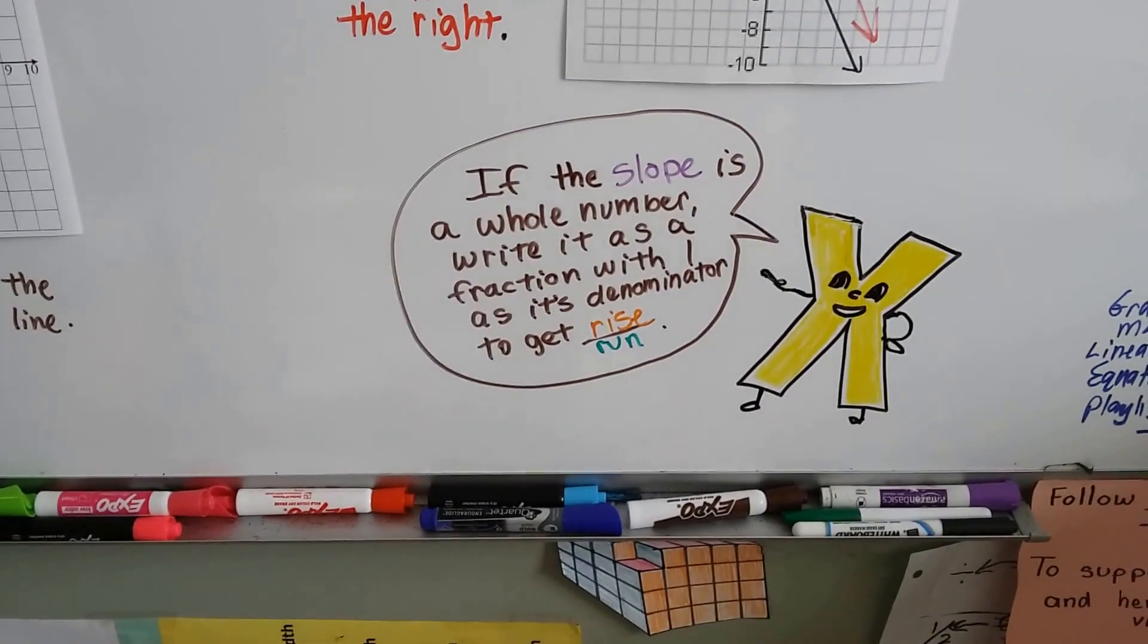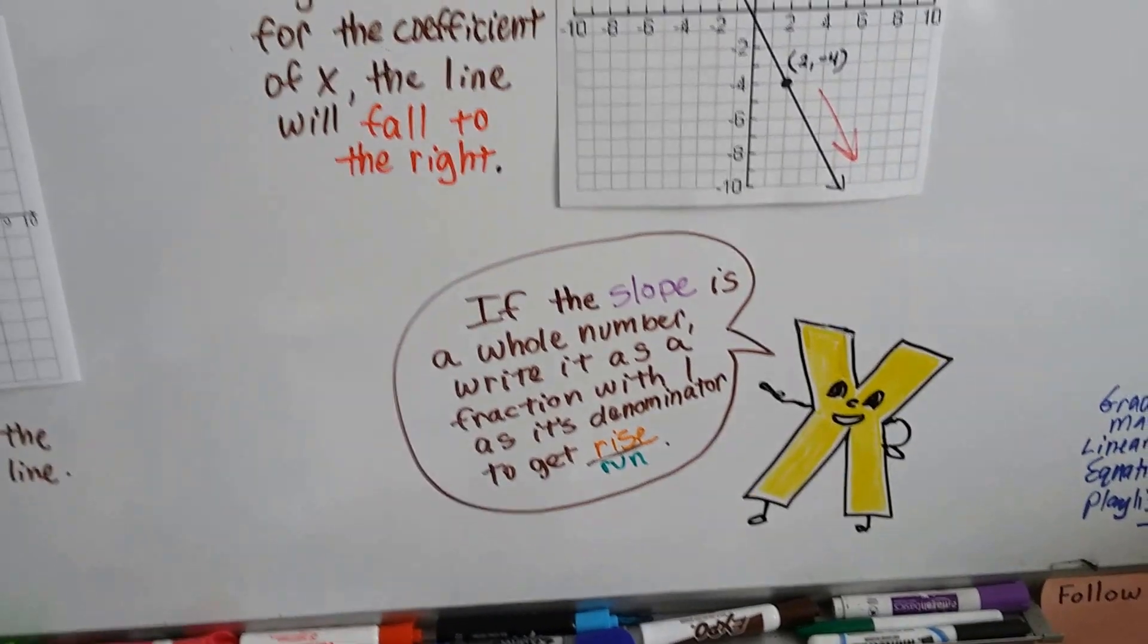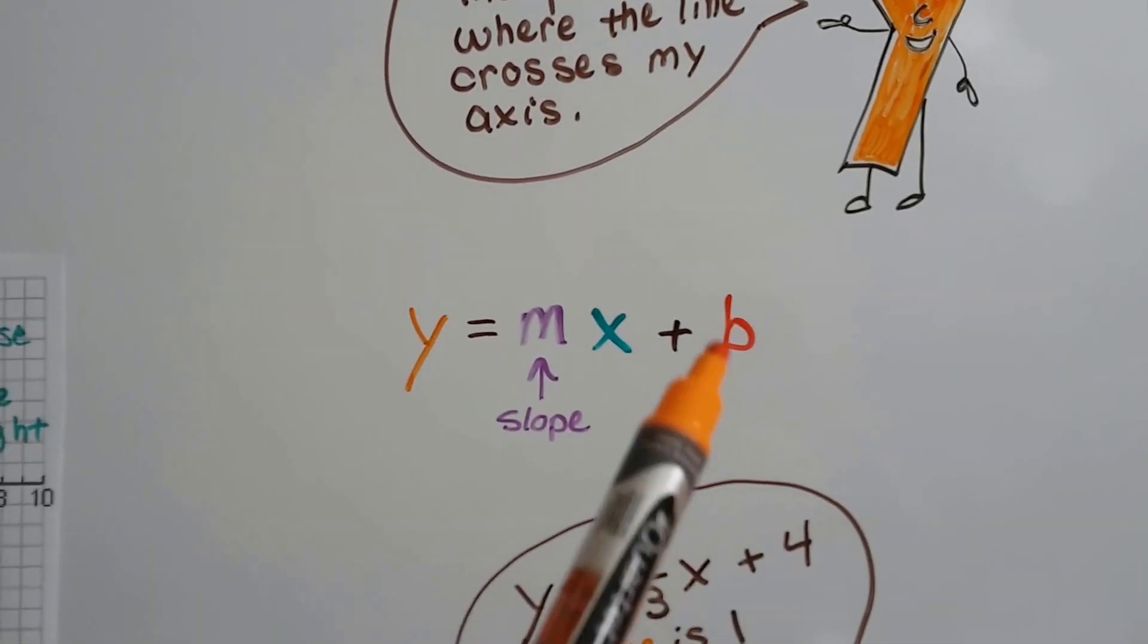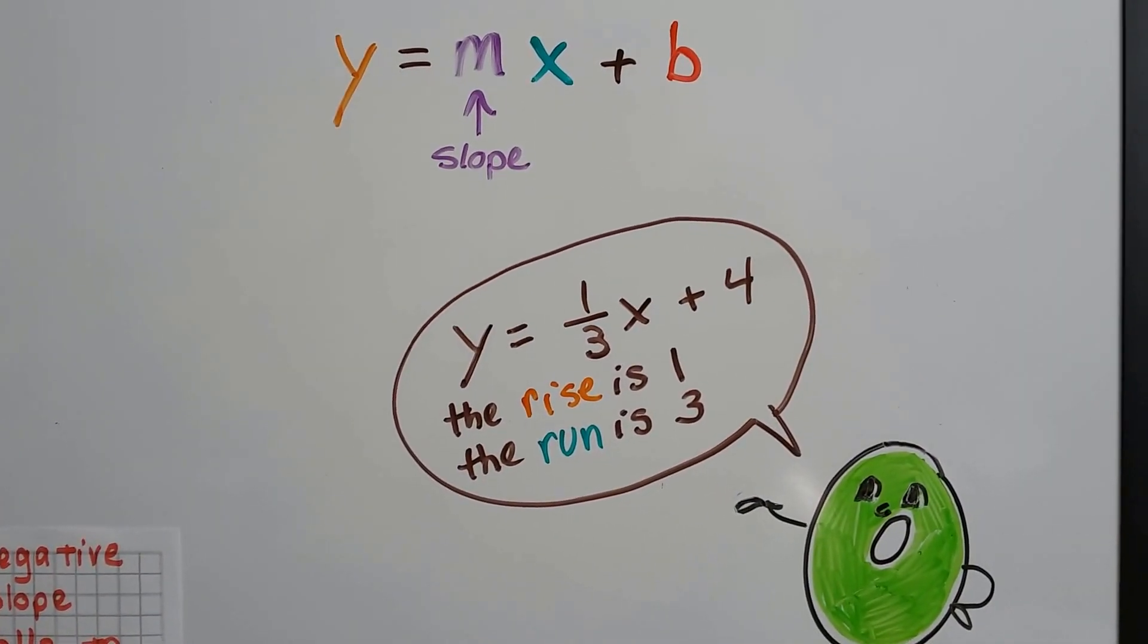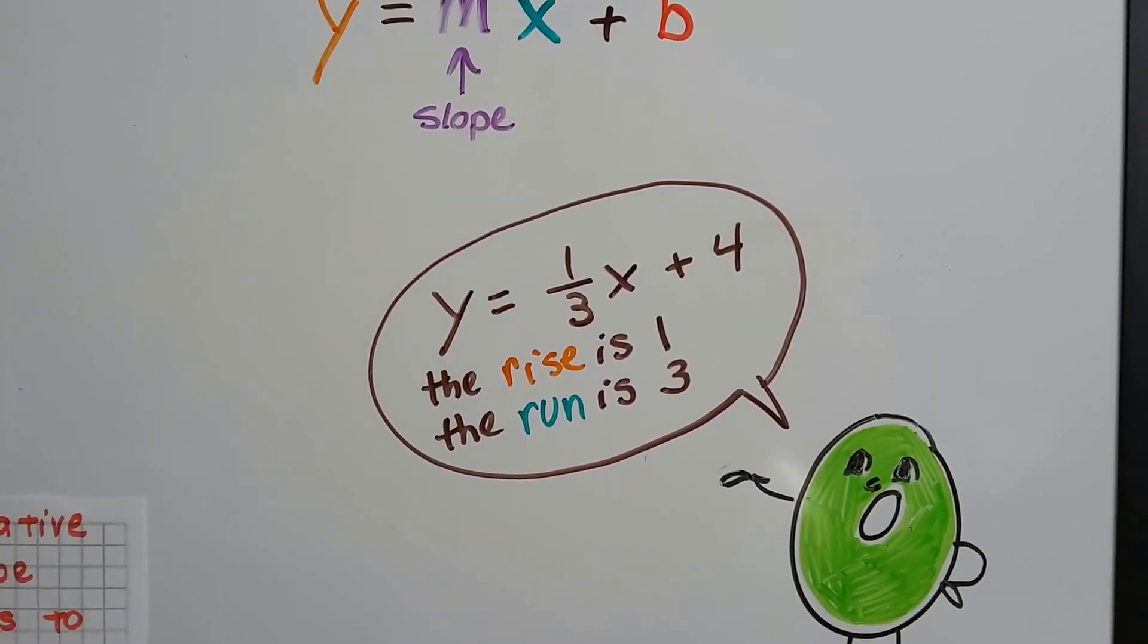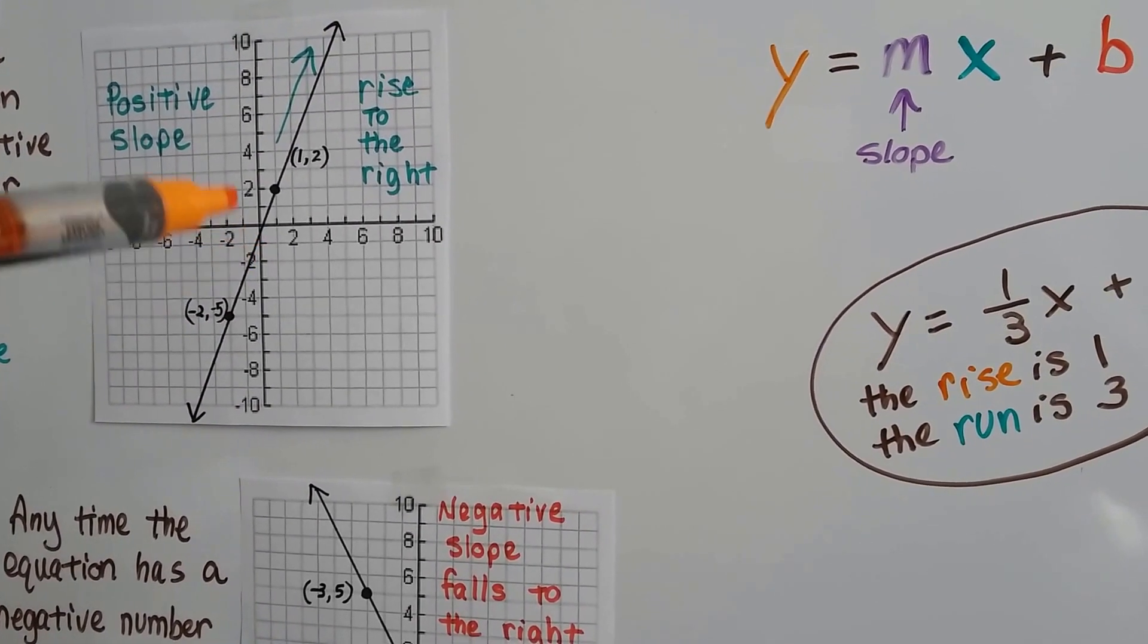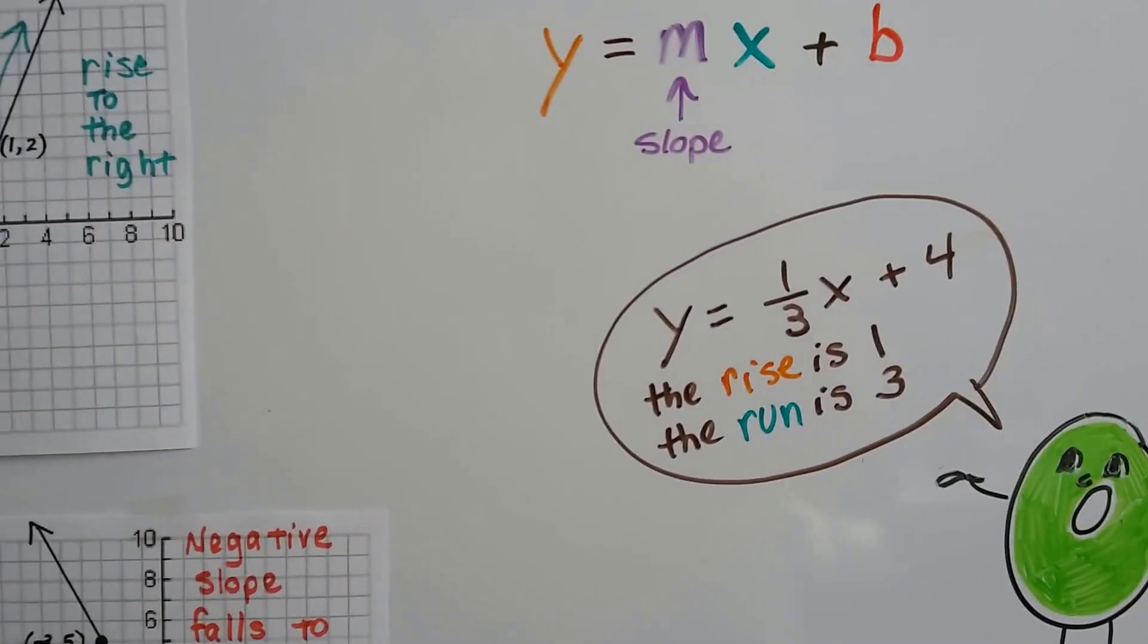If the slope is a whole number, we just write it as a fraction with a 1 as its denominator, and then we get the rise over the run. And remember, the b is the point where the line crosses the y-axis. So if you see something like y equals 1 third x plus 4, that's even easier because it's already in a fraction form. We know that's the rise and that's the run. The rise is 1 and the run is 3. And it's positive, so we know that the line is gonna go up this way. So the rise is 1, we'll count up 1. And our run is 3, so we'll count over 3. That's our slope.